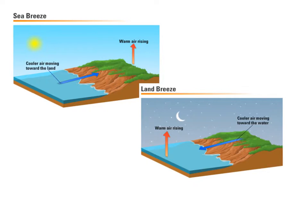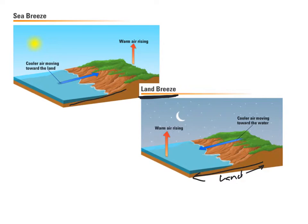One interesting thing about winds is we name them from the direction from which they blow. A land breeze is wind coming from the land out to the ocean. Conversely, a sea breeze is wind blowing from the sea onto the land. Remember: we name winds from where they come from.